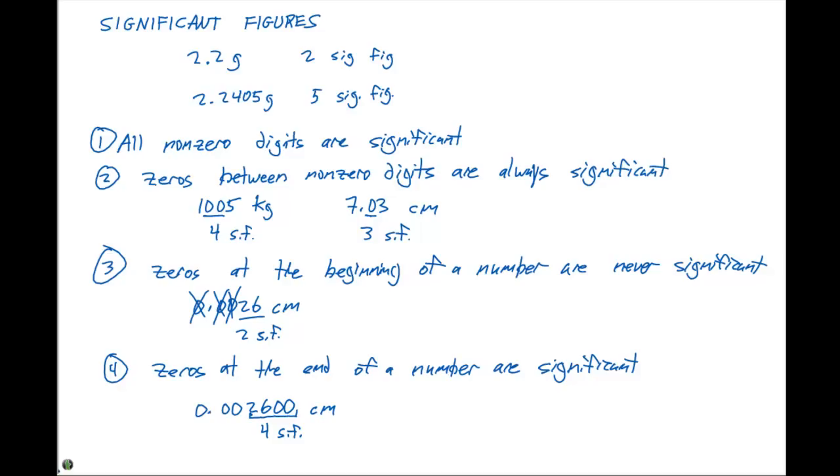A lot of times we can come into a situation where we have a number that ends with zeros but does not have a decimal point. For example, if we have the number 10,300 grams, the question is how many significant figures does this particular number have. What we need to come up with is a convention in order to represent this, and this is where scientific notation comes in.